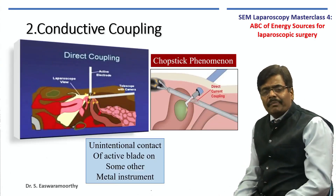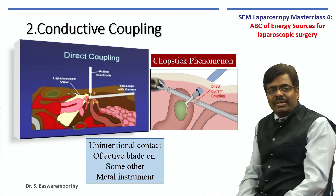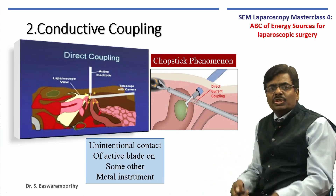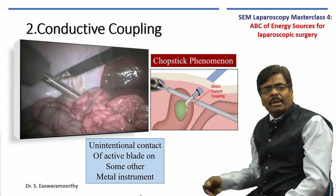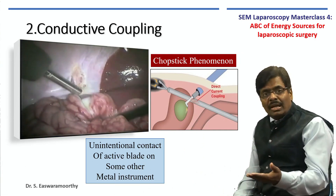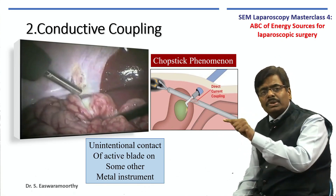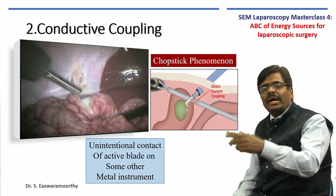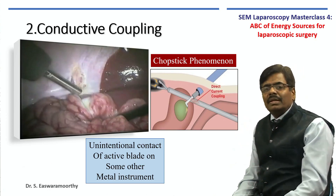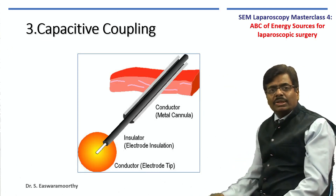The next important thing is conductive coupling, sometimes called the Chinese chopstick phenomenon. This happens when working in a narrow pelvis where instruments are crowding and touching each other. An unintentional touch between the active electrode and any other metallic equipment — even a large metal exposed surface — allows current to jump from one to the other, then to the intestine or whatever it is touching. This unintentional contact of the active blade on some other metal equipment is called conductive coupling.